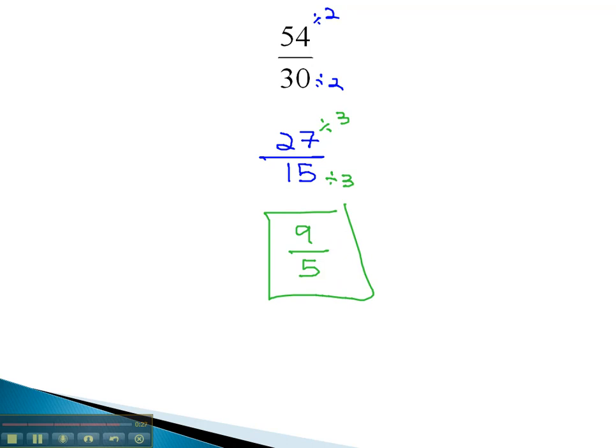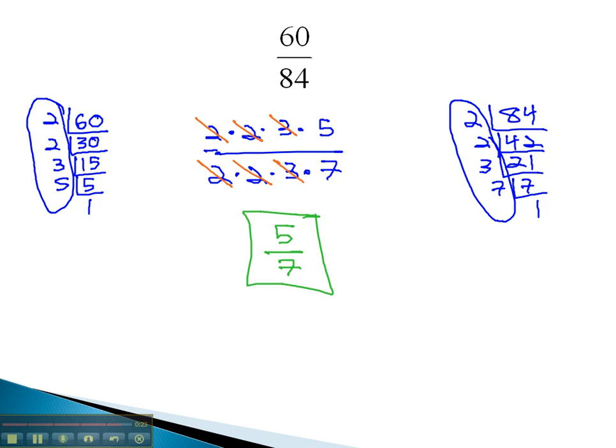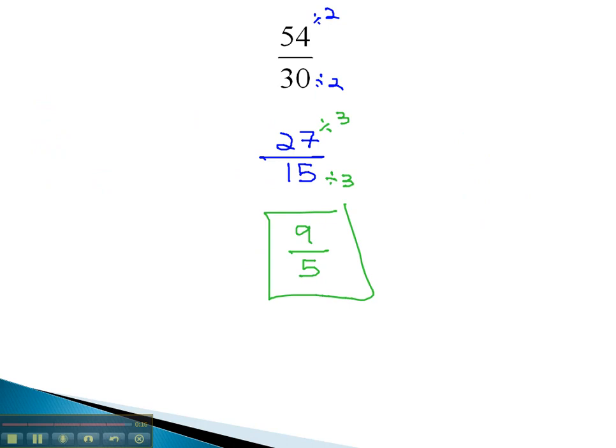So really there's two ways we can go about reducing a fraction. One, we can identify the prime factorizations and divide out all those common factors in the numerator and denominator. Or like we did on the second example, if you can see what those common factors are from the beginning, we can just divide them straight out and see what we reduce down to our simplified reduced fraction.